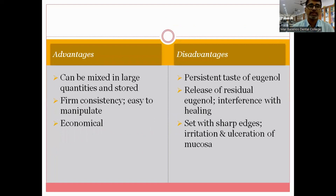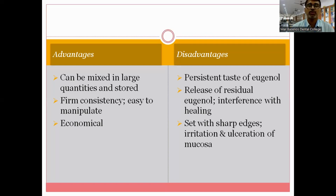The advantages of zinc oxide eugenol dressings are: it can be mixed in large quantities and stored; once mixed it assumes a firm consistency which is easy to manipulate; and most importantly, it is very economical. However, the disadvantages outweigh the advantages. The persistent taste of eugenol remains in the mouth for a long period. The setting reaction releases residual eugenol, which interferes with healing, especially of the mucosa. Additionally, zinc oxide eugenol sets with sharp edges that can irritate the mucosa and cause ulcerations.